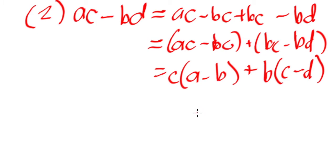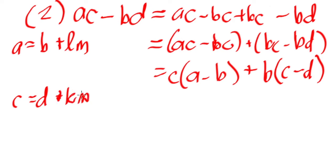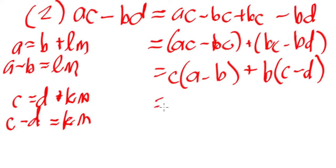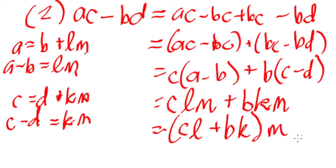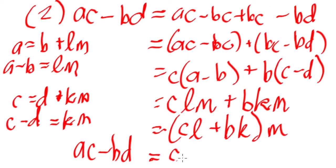From our earlier forms, A equals B plus LM and C equals D plus KM, so A minus B equals LM and C minus D equals KM. Substituting: C times LM plus B times KM. Factoring out M gives (CL plus BK) times M. Therefore, AC minus BD equals (CL plus BK) times M.